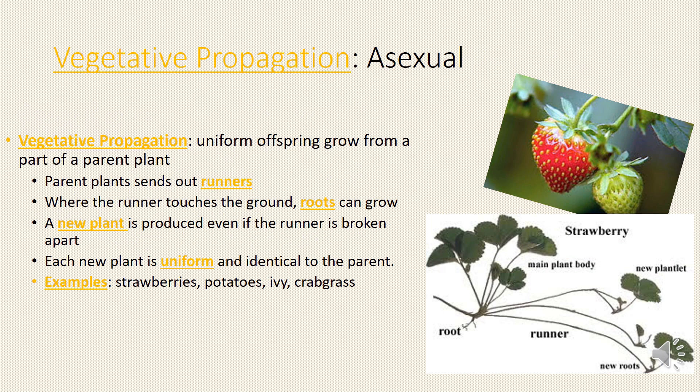Vegetative propagation is an example of asexual reproduction. Uniform offspring grow from a part of a parent plant. The parent plant sends out runners, and where the runner touches the ground, roots can grow. A new plant is produced even if the runner is broken apart — each new plant is identical to the parent.